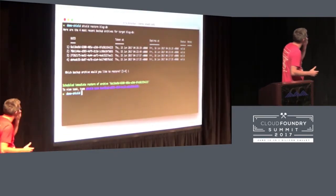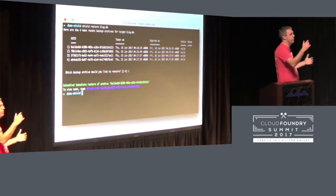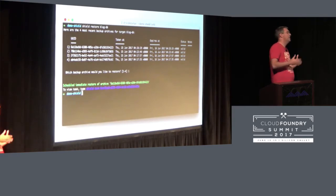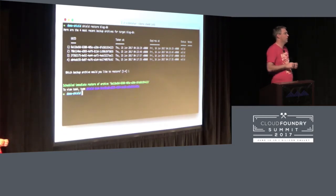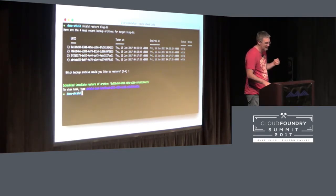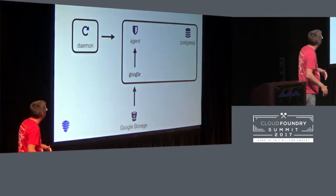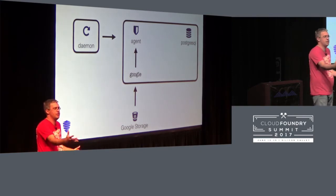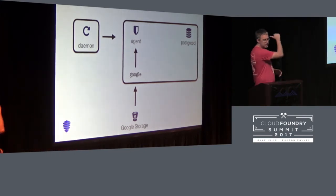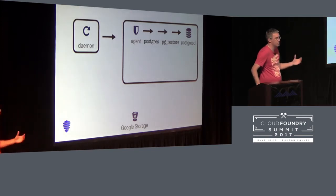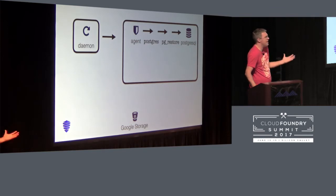For restore, it works in reverse. The CLI talks to the API, the daemon calls out to the agent based on the target, and the agent calls out to the Google CLI plugin, which fetches from Google. Then it unpacks the bzip file and uses PG restore. You can imagine running a plugin for anything. There are already a whole bunch that exist — it's a bit messy, so I've added icons to help organize them.